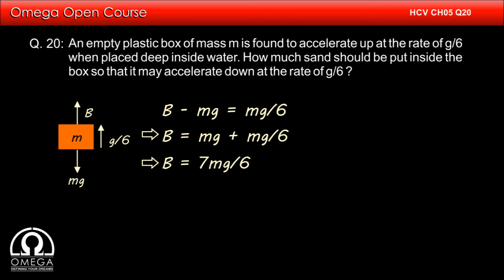Let us assume that m' mass of sand is put into the box to move it downwards with g by 6 acceleration. Let us draw the free body diagram of the box with sand. The gravitational force in this case will be m plus m' into g.